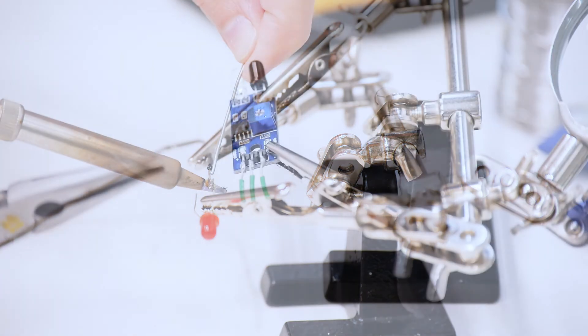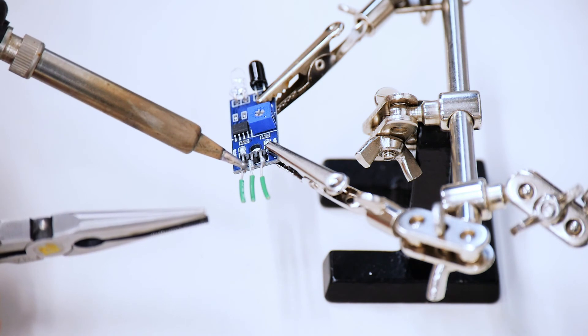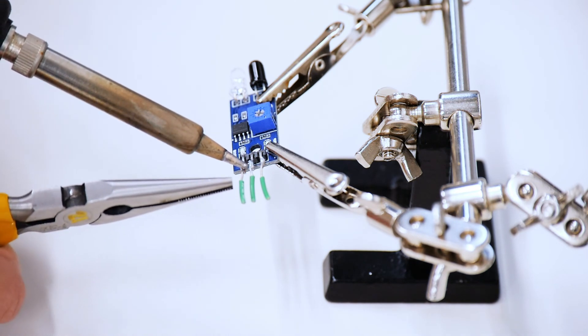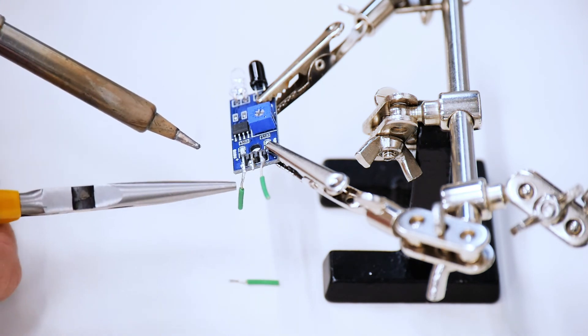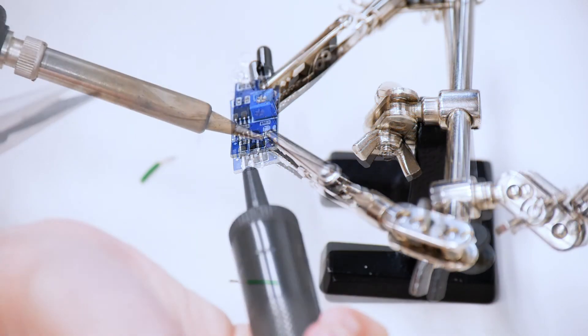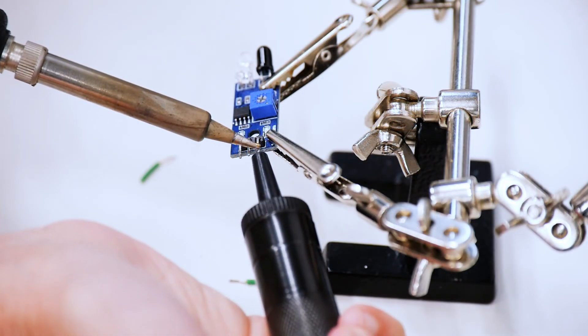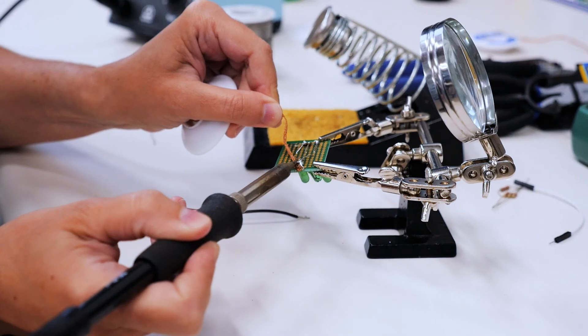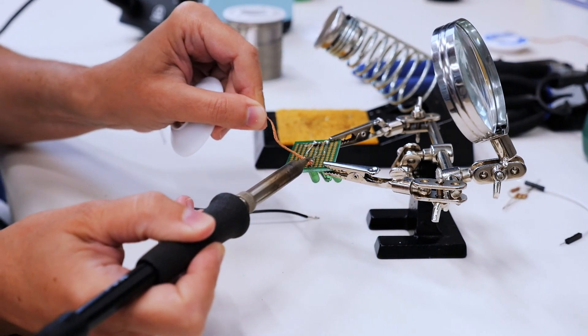To remove solder from a component remove any tape or covers from the joint. Place the hot iron on top of the joint for a few seconds and pull the component or wire out of the joint. Clean the extra solder utilizing a solder sucker. Alternatively you may also use solder wick to remove melted solder from a joint.